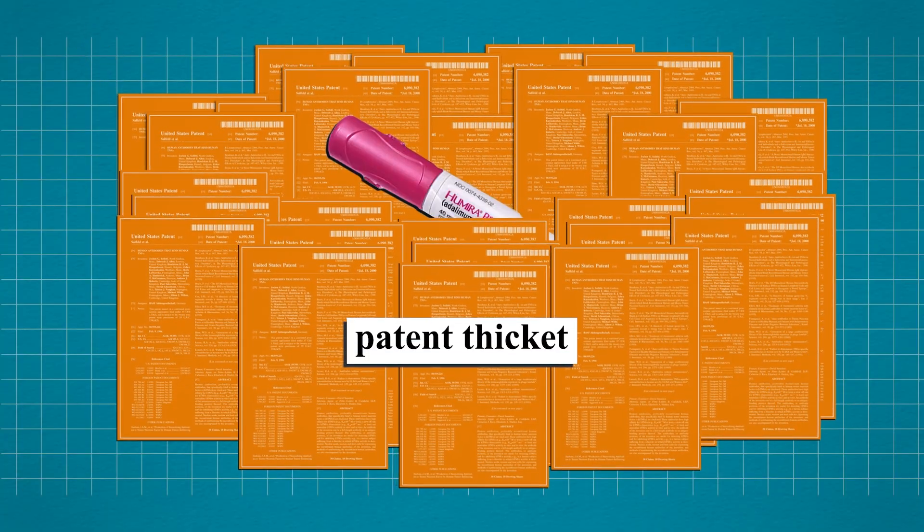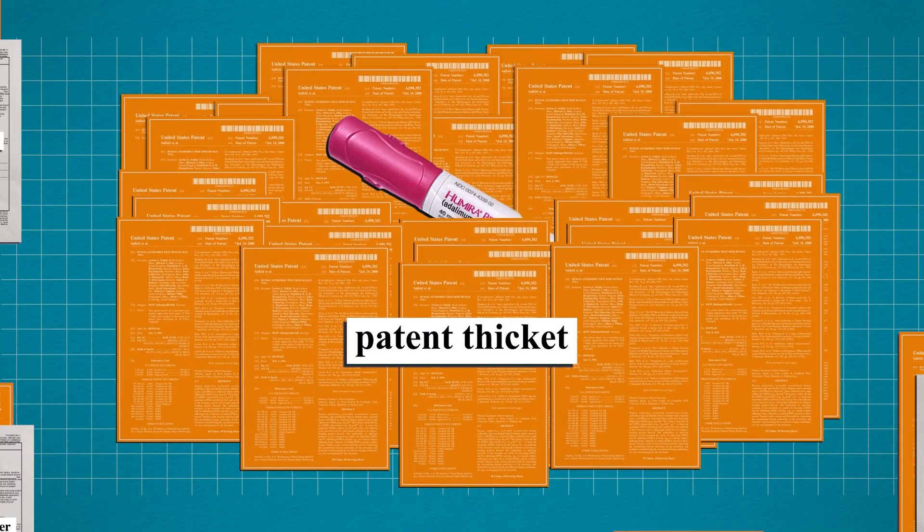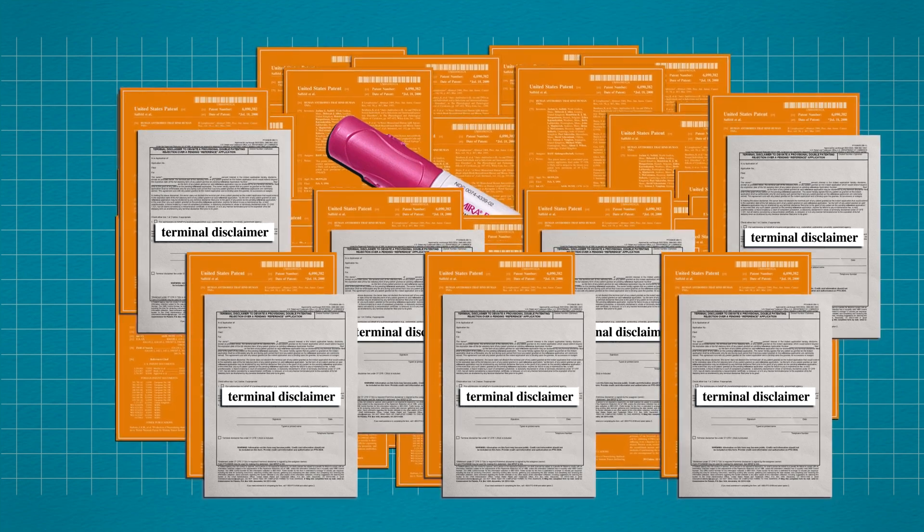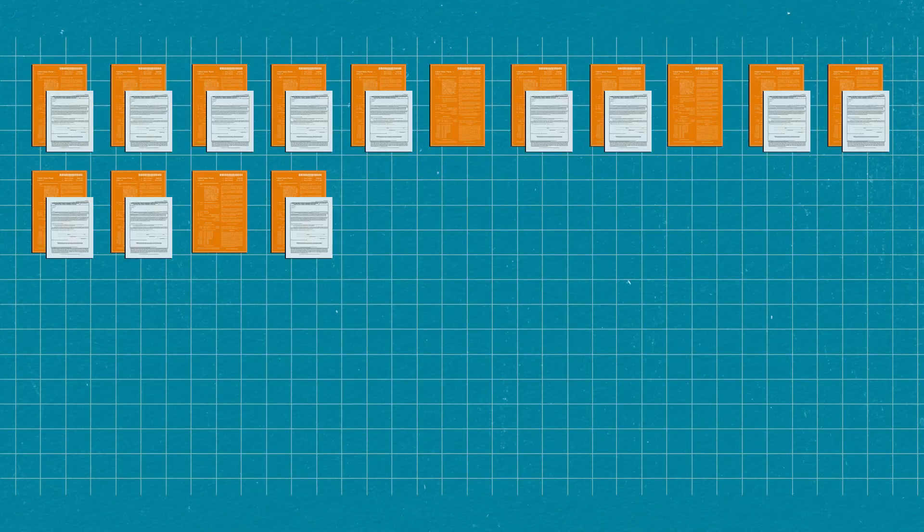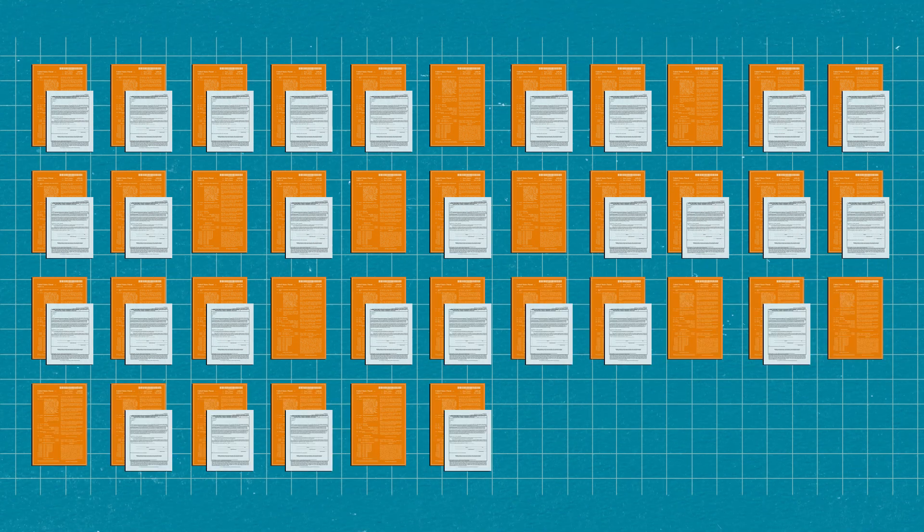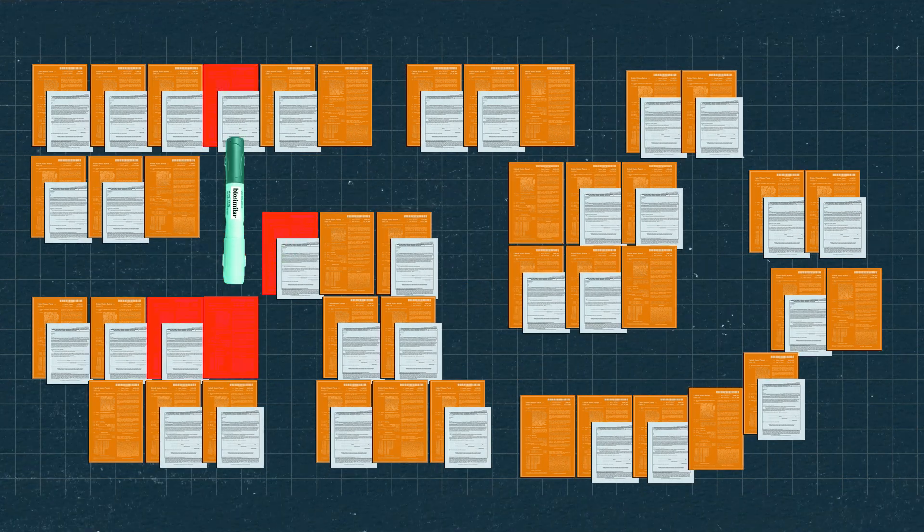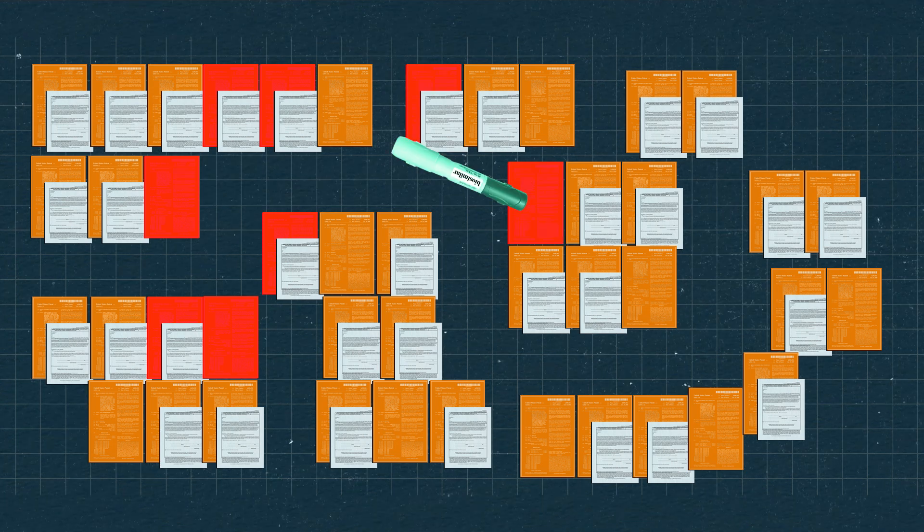How does this make patent thickets possible? What's the point of getting a continuation patent with a terminal disclaimer if it doesn't technically protect a drug for any additional time? Think about it this way. Every additional patent on a brand name drug, whether new and obvious or not, is another obstacle for a generic drug company hoping to develop a generic version of the drug.